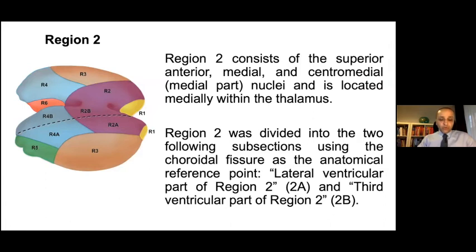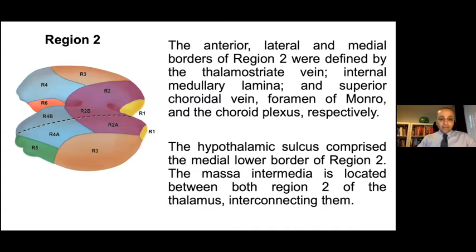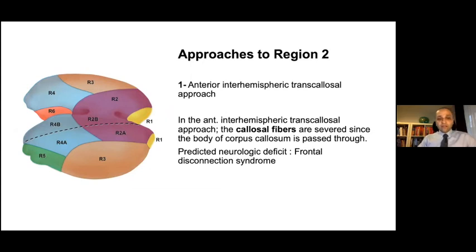Region 2 consists of the superior anterior, medial, and central medial nuclei, located medially within the thalamus. It was divided into two subsections using the choroidal fissure as an anatomical reference: the lateral ventricular part and the third ventricular part. The anterior, lateral, and medial borders of Region 2 are defined by the thalamic vein, internal medullary lamina, superior choroidal vein, foramen of Monro, and choroid plexus, respectively. For reaching Region 2, we used the anterior interhemispheric transcallosal approach, with predicted neurologic deficits of frontal disconnection syndrome.